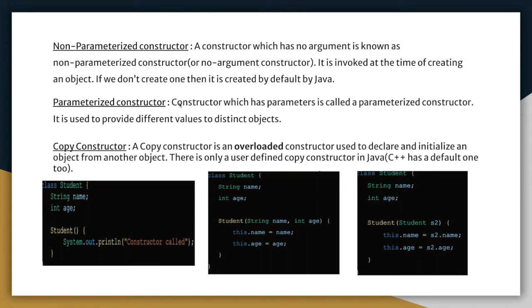Parameterized constructors are constructors which have parameters. You can see in the student constructor we are sending parameters — this is called a parameterized constructor. A copy constructor is an overloaded constructor used to declare and initialize an object from another object. As you can see, in the student constructor we are passing the object of the student class itself, copying another object's values into the newly created object.